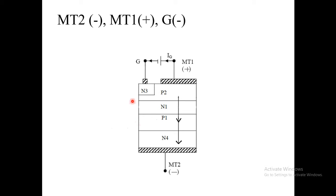But this remote gate is sensitive and this will forward bias junction N1P1. So after forward biasing of junction N1P1, junction J1 is already forward bias, junction J2 is already forward bias. And current flows from MT1 positive to P2, N1, P1, and N4, and back to MT2. And like this current flows.